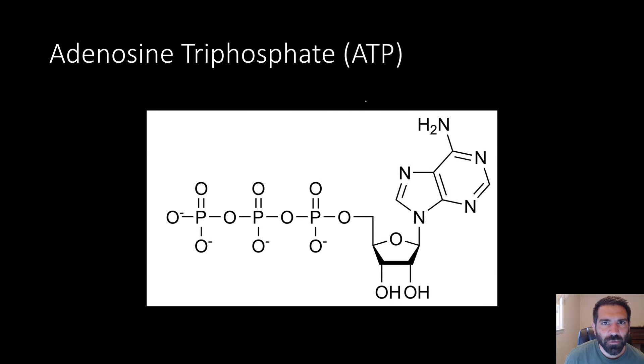This is ATP or adenosine triphosphate. This part over here is the adenosine and the triphosphate is right here. Three phosphate groups. ATP is like a charged battery. This last phosphate group can be removed and when it's removed, it releases its stored energy.